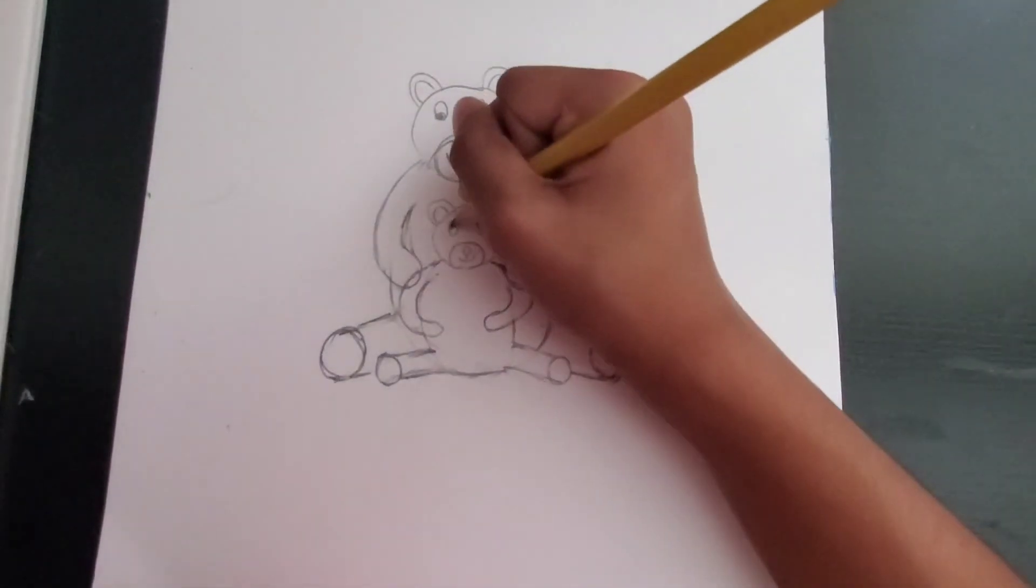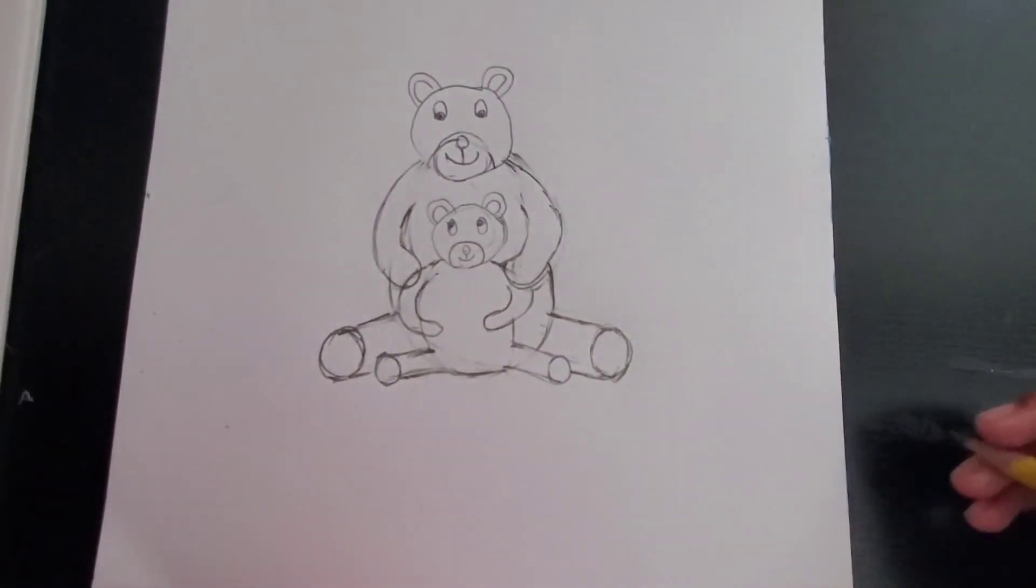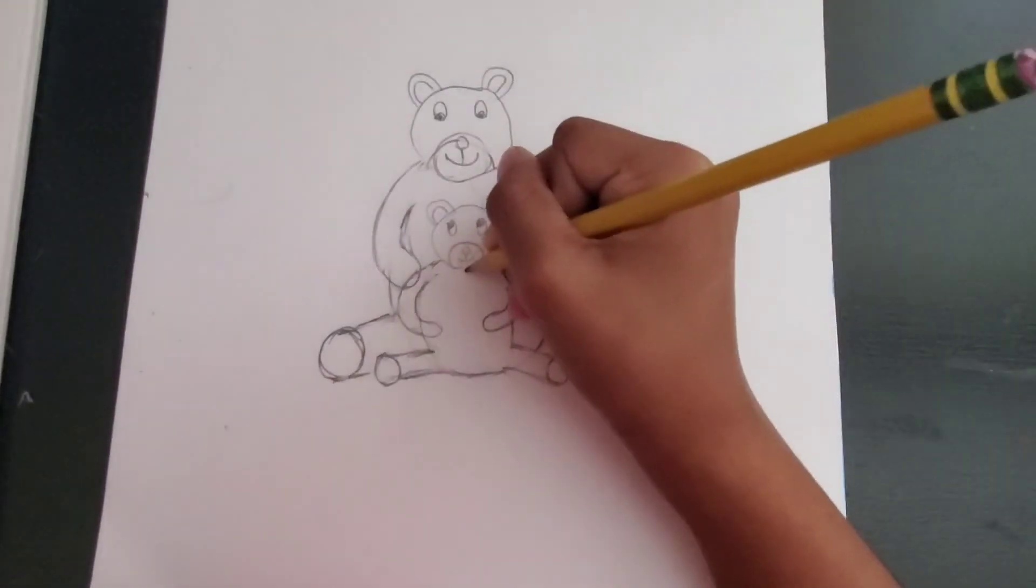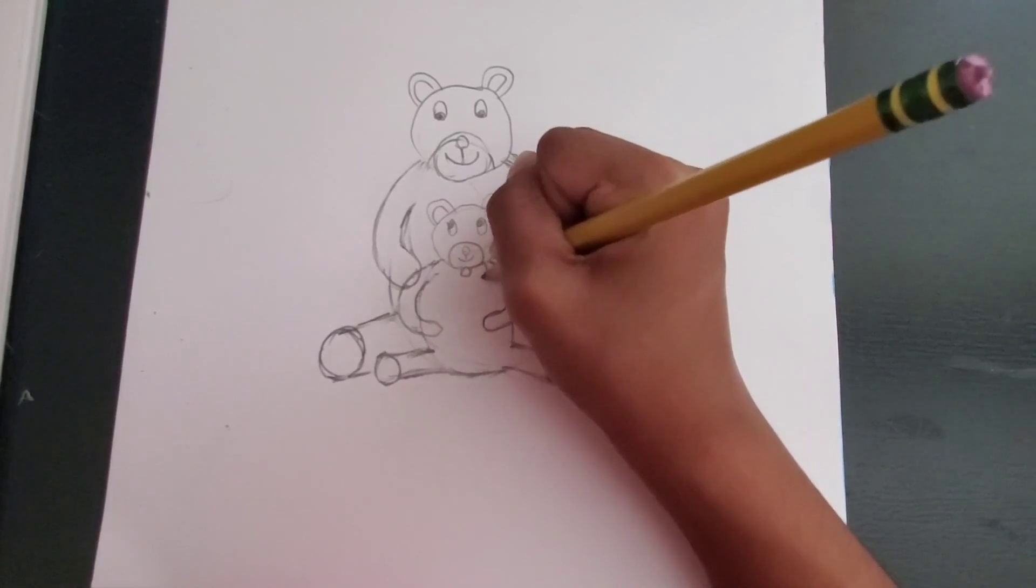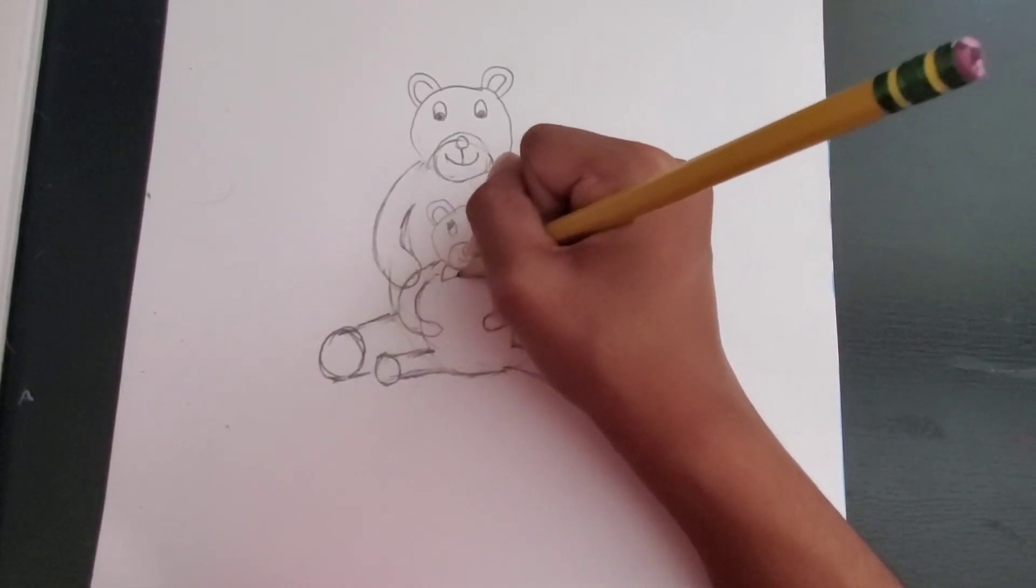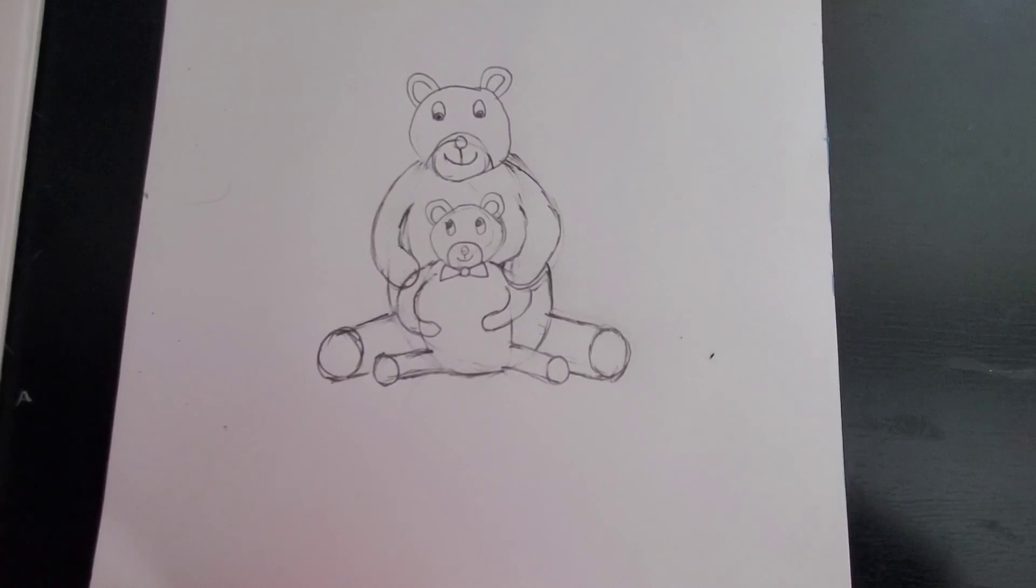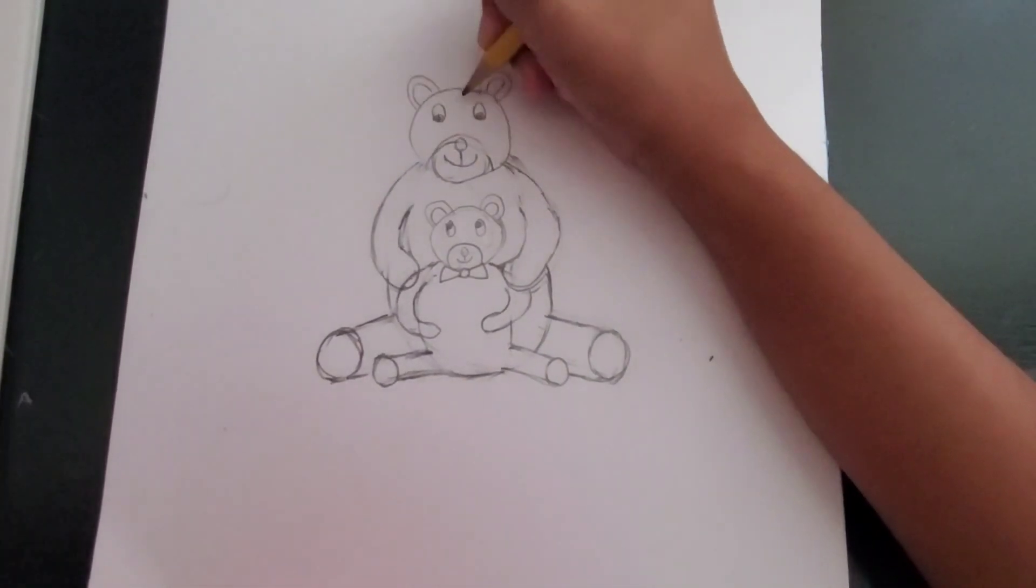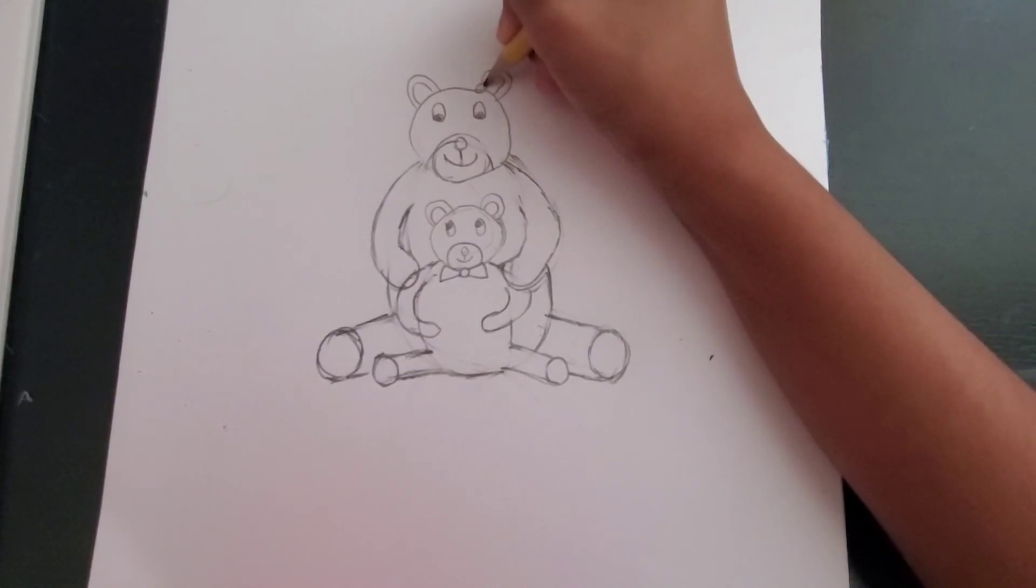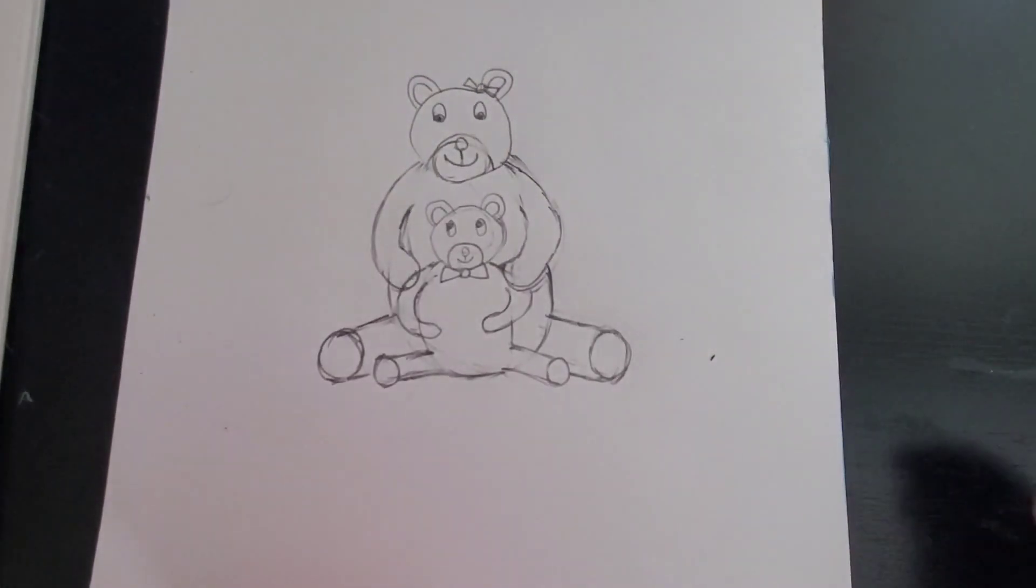Now if you want we can add a little bow on the baby's neck. And a little hair bow for the mama on the side. And that's it. So all that is left is to color.